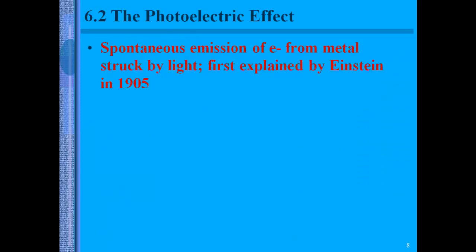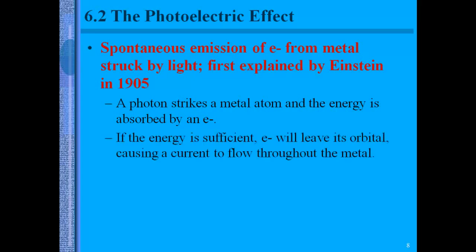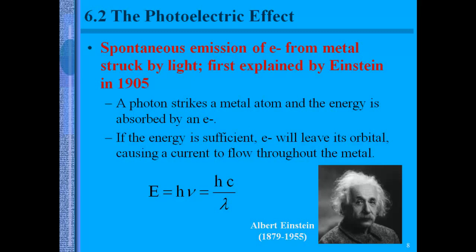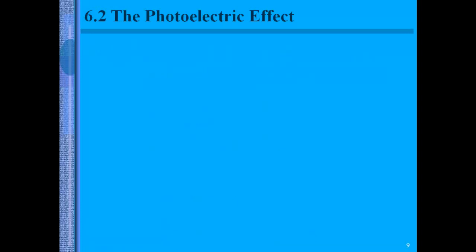The photoelectric effect is the spontaneous emission of electrons from metal struck by light. Einstein first explained this in 1905. A photon strikes a metal atom and the energy is absorbed by an electron. If the energy is sufficient, the electron will leave its orbital, causing a current to flow through the metal. He was also able to piggyback on the idea of Planck that the energy will have a relationship to the frequency of that photon. What's interesting is that Einstein actually won his Nobel Prize for his photoelectric effect work, not his theory of relativity.